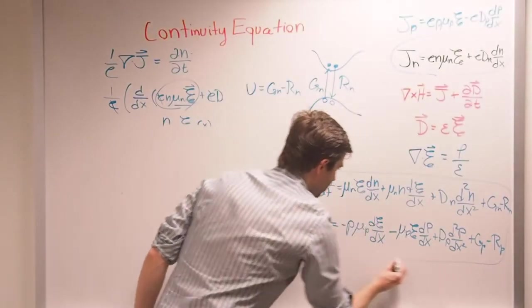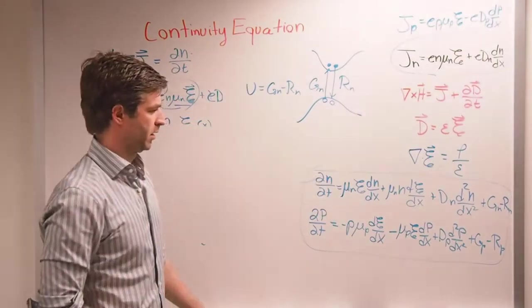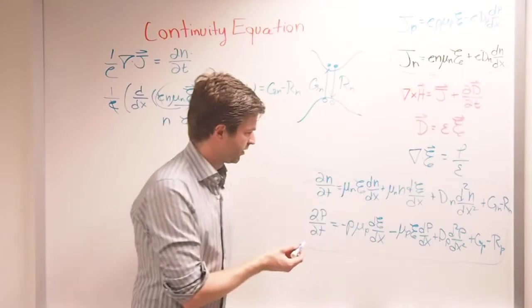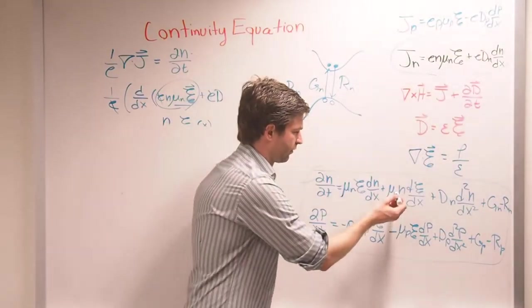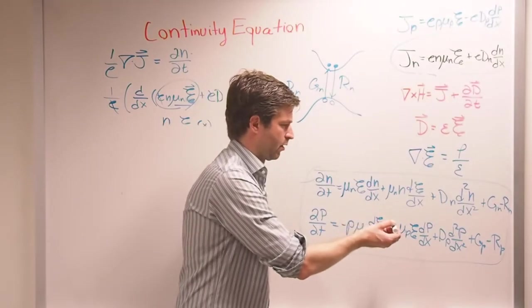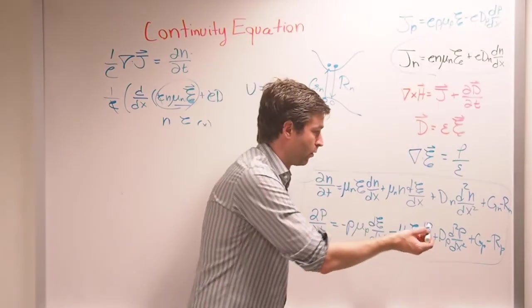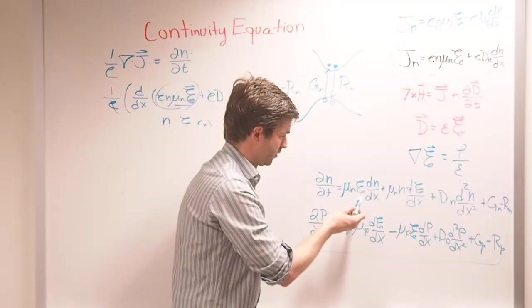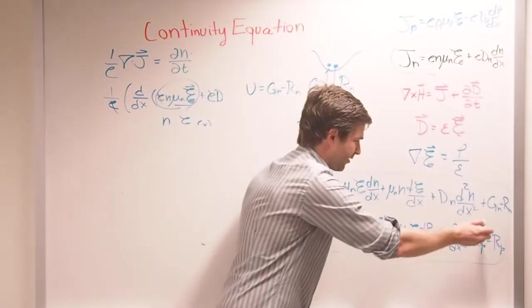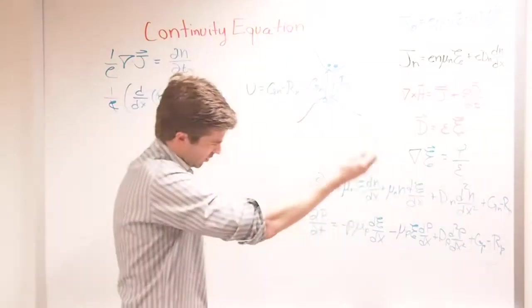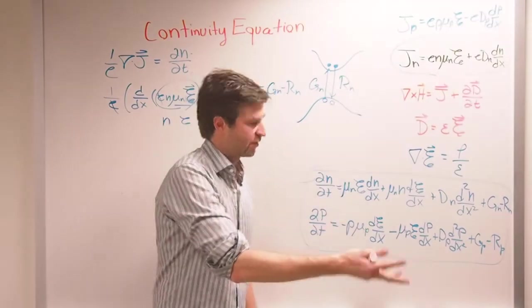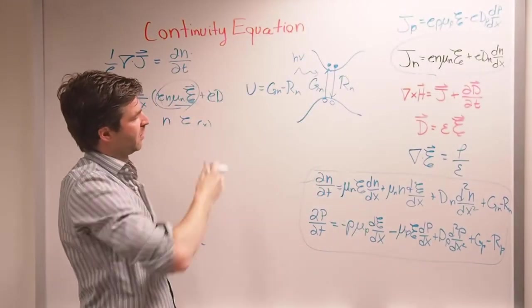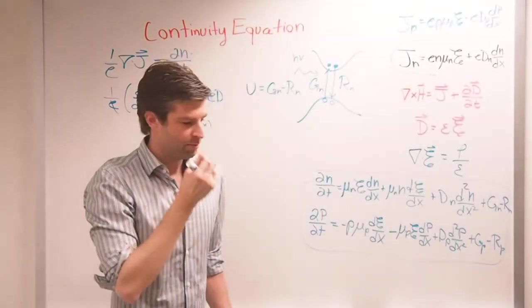Let's consider an intrinsic semiconductor. For an intrinsic semiconductor, there's no electric field, so that term goes to zero. There's no doping, so there are no doping gradients, so those terms go to zero. There's no generation-recombination, so the whole equation is just zero. But if you shine some light with photon energy hν, it's going to create some electron-hole pairs and you'll have generation.